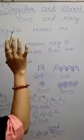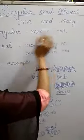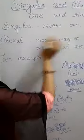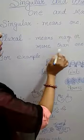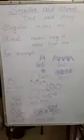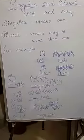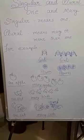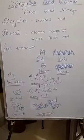Simply we have to say one and many. Singular means one, plural means many or more than one. While changing from singular to plural, we generally add 's' to the end of the word.